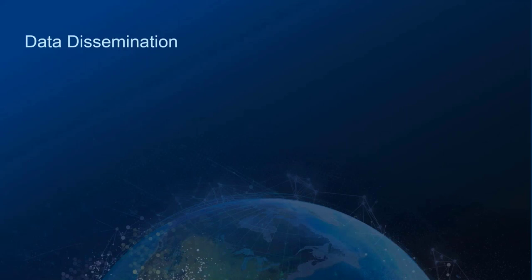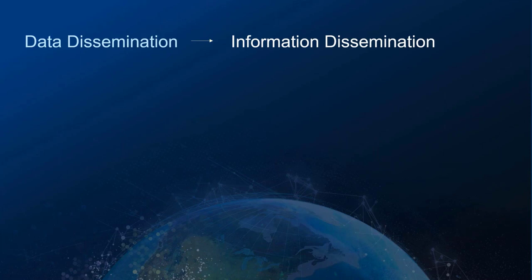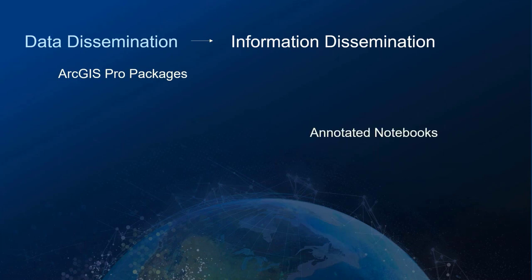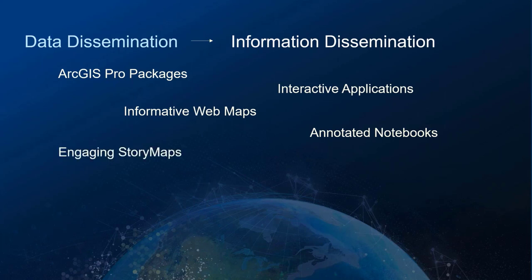We're talking here mostly about data dissemination, but I really like to think about information dissemination. We're not ideally just putting out ones and zeros — we're talking about developing information products that everybody can use. Those could be in a lot of different forms: ArcGIS Pro packages, annotated Jupyter notebooks, informative web maps, interactive applications, engaging story maps that provide context to data, and performant web services, which is what I'm going to be focusing on today.